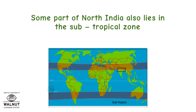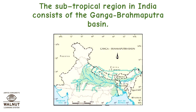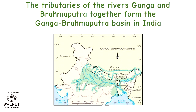Some part of North India also lies in the subtropical zone. The subtropical region in India consists of the Ganga Brahmaputra Basin. The tributaries of the rivers Ganga and Brahmaputra together form the Ganga Brahmaputra Basin in India.